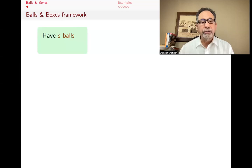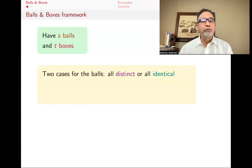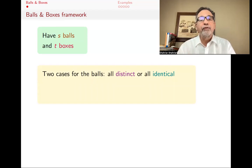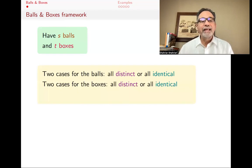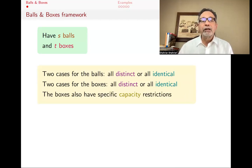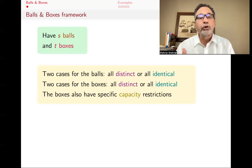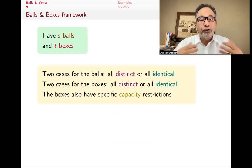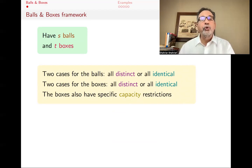Say that you have S balls and T boxes, and you have two cases. It could be that your balls are all distinct — they're all different from each other, maybe each has a number on it — or maybe they're all identical and you can't tell them apart. The same goes for the boxes: they could be all distinct, maybe with a color or letter, or maybe they're all identical. The boxes also have specific capacity restrictions: you might not be able to put more than one ball in a box, or you might have to put at least one ball in a box, or maybe some box can only take an odd number of balls.